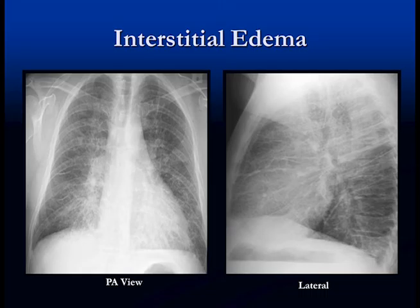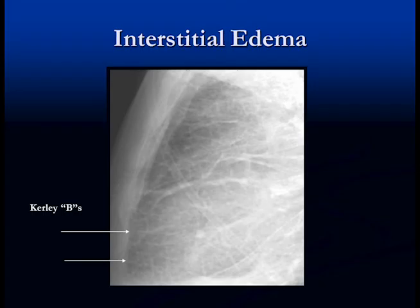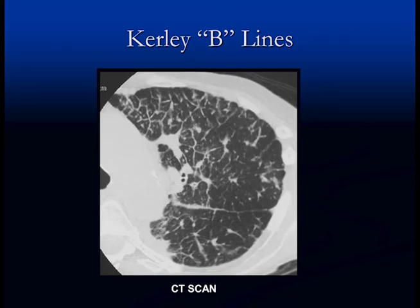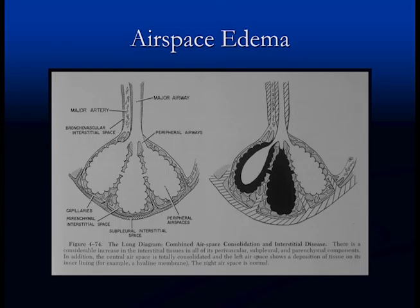In the lateral view we may also see small bilateral effusions with interstitial edema. To summarize the changes of interstitial edema: peribronchial cuffing, Kerley B lines, thickening of the fissures, small bilateral effusions, increased interstitial markings, and hila that are enlarged and indistinct. A blow-up shows the Kerley B lines as perpendicular lines where fluid tracks into the lung from the subpleural space — also visible on CT scan.